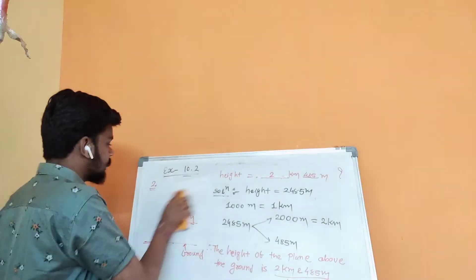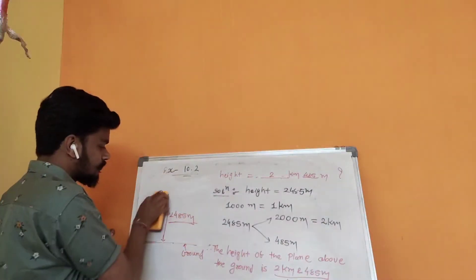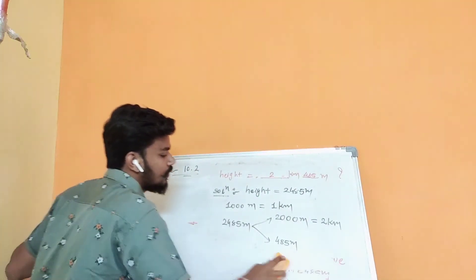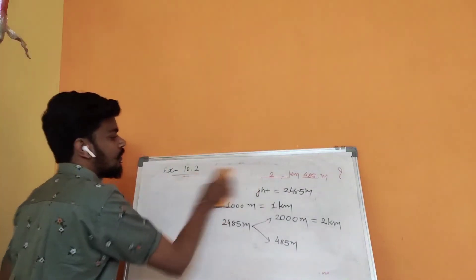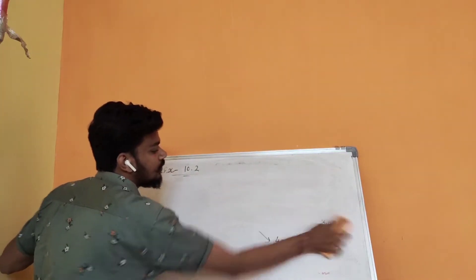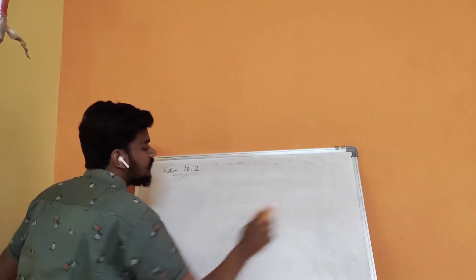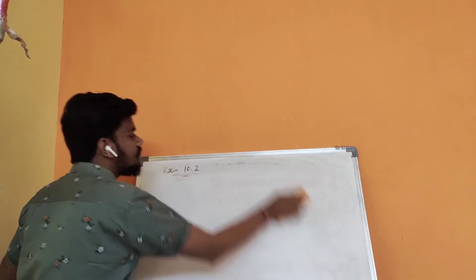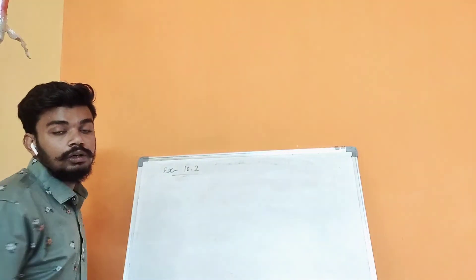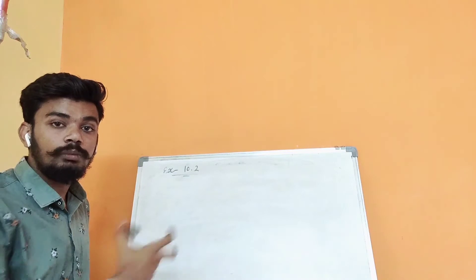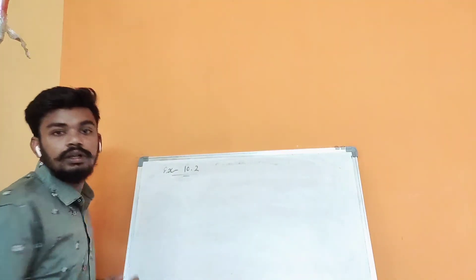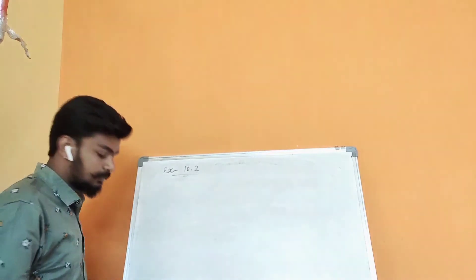Remember the steps we followed here: first, read the question two to three times; then do the planning of how you will perform it; then convert it into mathematical form; then solve it; and finally write the answer. Okay?